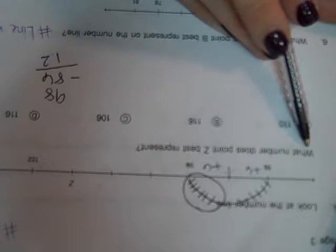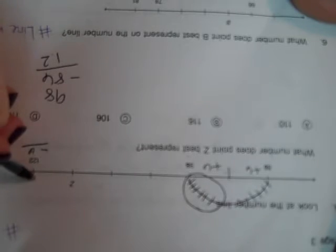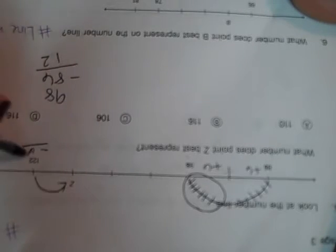So now we're going to go to our letter because the question asks us what number does point Z best represent. And we're going to take and subtract 6 from our number because we're going backwards. 122 minus 6, we're going to change that to a 12, change that to a 1. 12 minus 6 is 6. Bring our one down and our other one down.